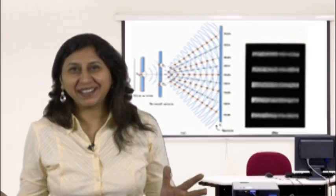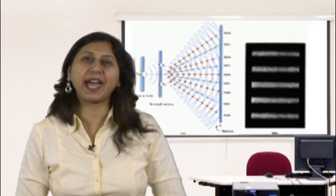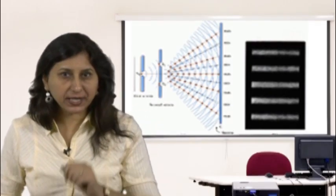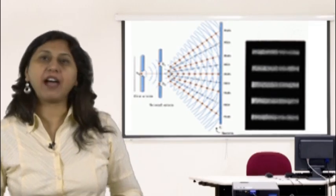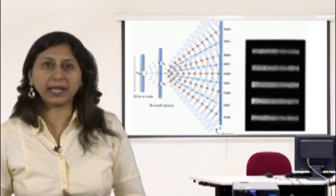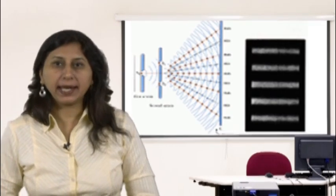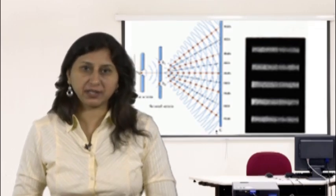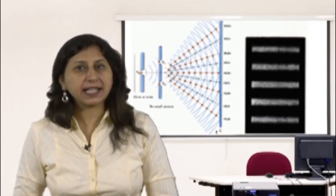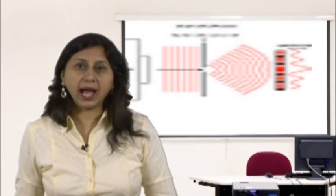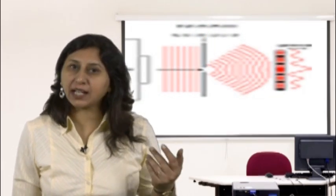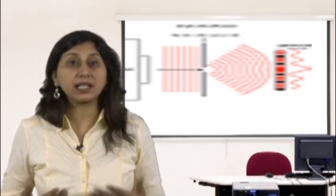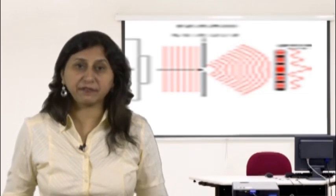Hello students, let us have a look at the seventh chapter: Wave Optics. After studying this chapter you will be able to explain Huygens' experiment and interference, discuss Young's experiment, understand Young's double slit experiment, and explain single slit diffraction.